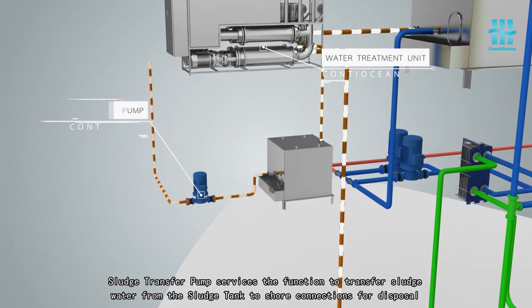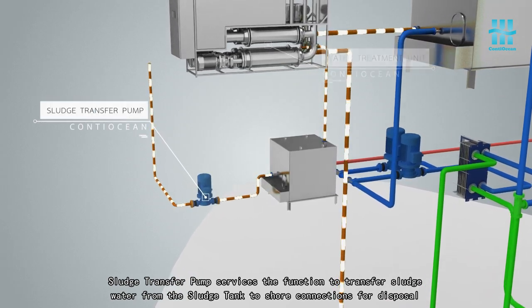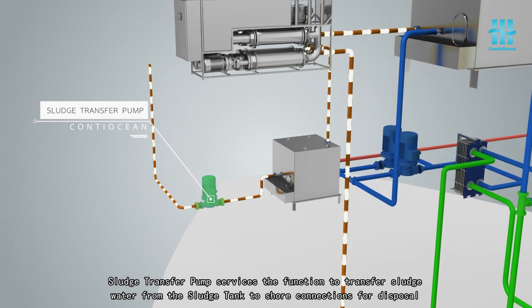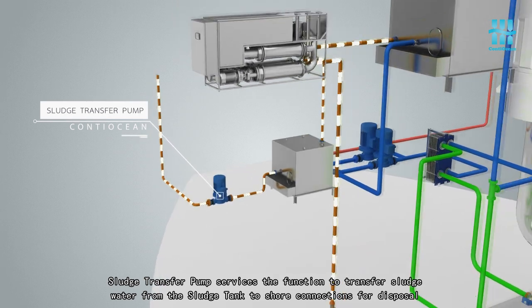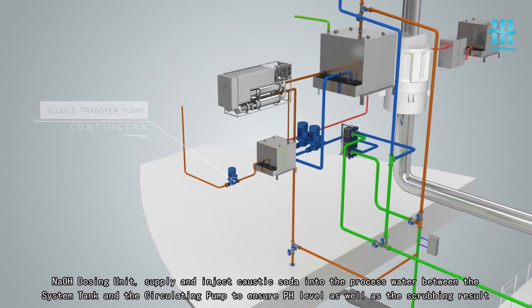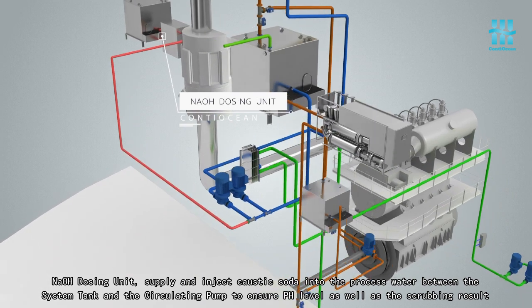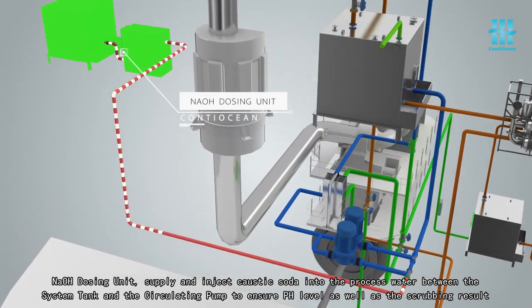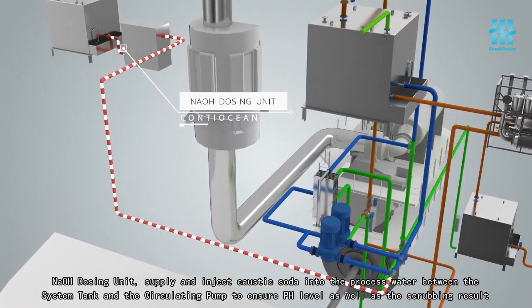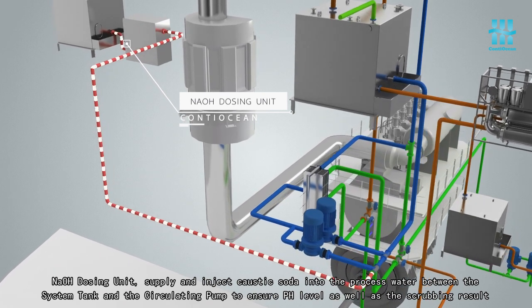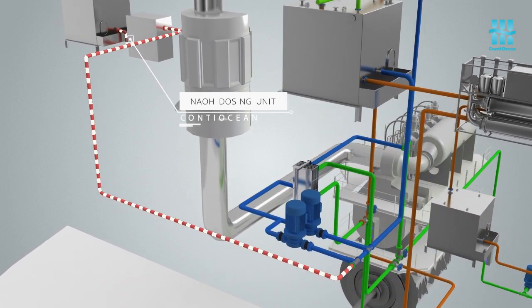Sludge transfer pump services the function to transfer sludge water from the sludge tank to shore connections for disposal. NaOH dosing unit supply and injects caustic soda into the processed water between the system tank and the circulating pump to ensure pH level as well as the scrubbing result.